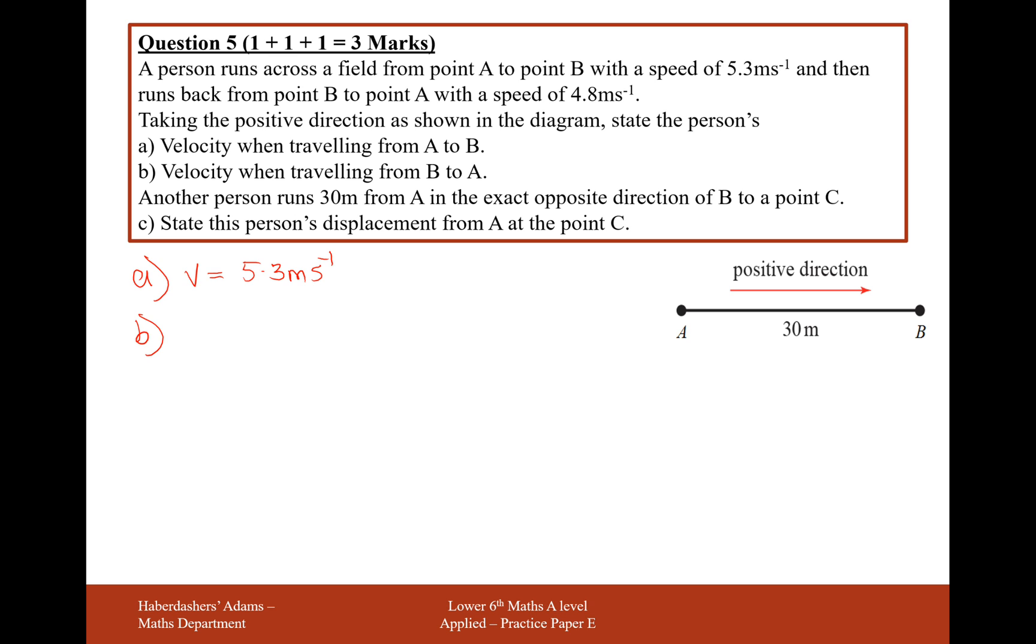Now the key part here is which direction is the positive direction. And if you're traveling backwards from B to A, this is the negative direction. So in this case, their velocity is minus 4.8 meters per second.